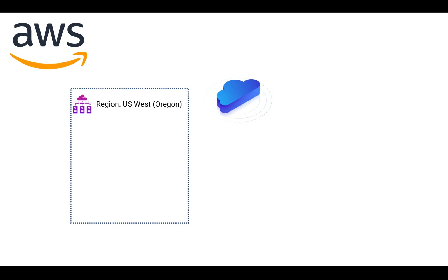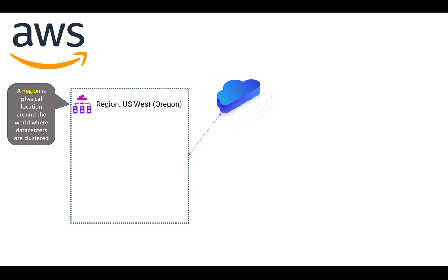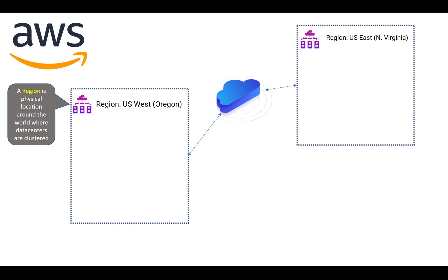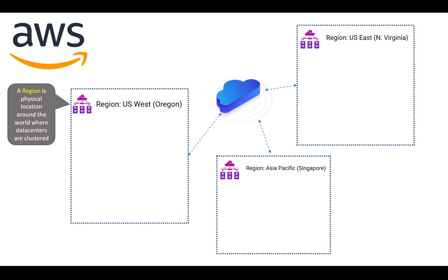A region is a physical location in the world. For example, US West Oregon — Oregon is a physical location in the world, and in that location you'll have a lot of clustered data centers. Similarly, US West also has US East which can be in North Virginia, and there are other locations like Singapore and Mumbai. So a region is a physical location across the world, and I'll show how many regions exist in AWS in the upcoming slides.